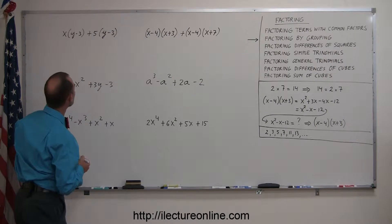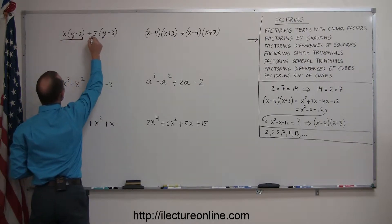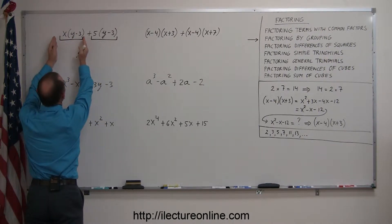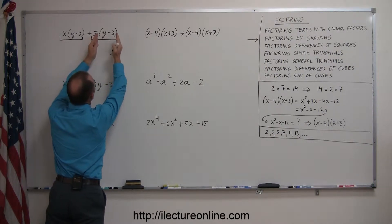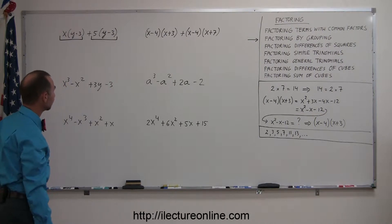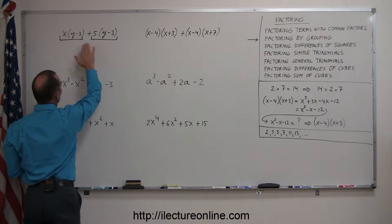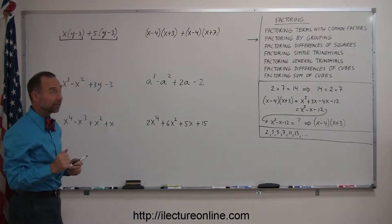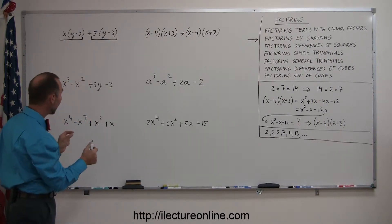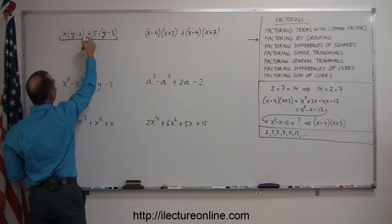Looking at the first example, notice that there's only two terms. It may not be immediately obvious, but notice that x is multiplied by (y minus 3), so that forms one term. The 5 is multiplied by (y minus 3), that forms a second term, and they're separated by a plus sign. Is there something common between this term and this term? Yes — they both have a (y minus 3) within the parentheses, and those are factors because they're multiplied times the item in front.